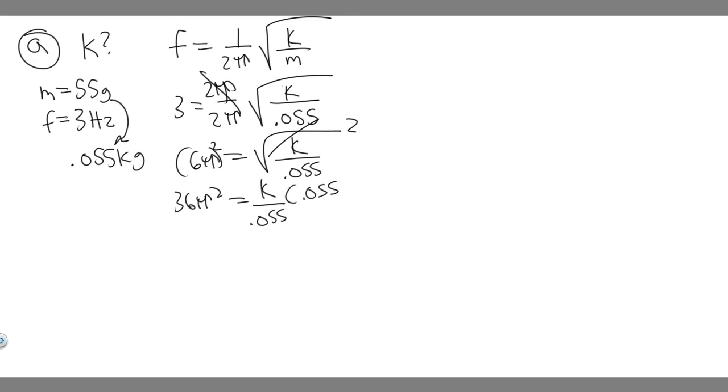And then it's just going to be k over 0.055. If we want k by itself, multiply both sides by 0.055. Just do 0.055 multiplied by 36 pi squared and you're going to get k. When you do that, you're going to get k equals 19.54181671 and so on.